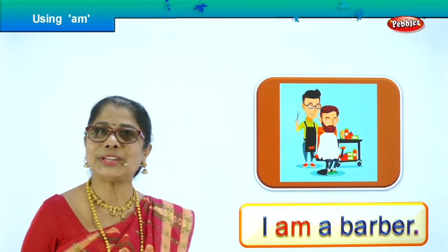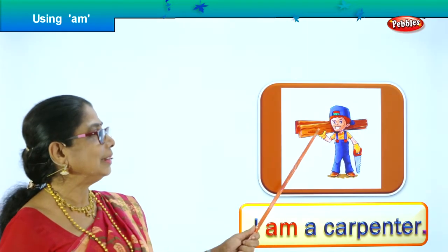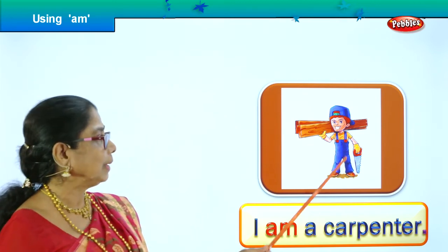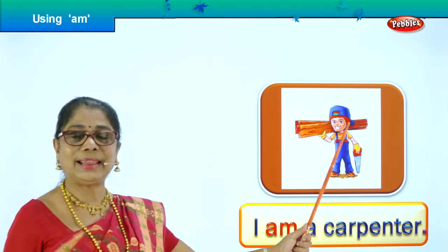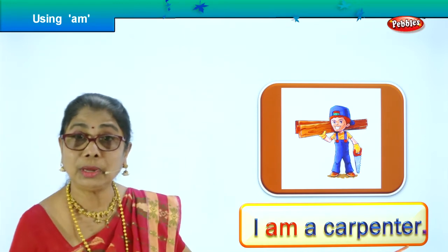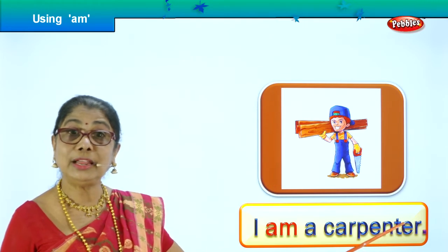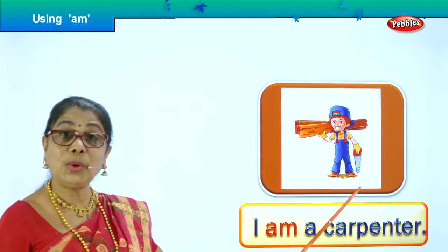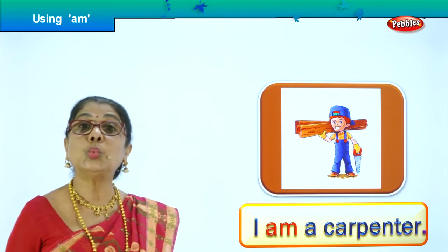Let's go to our next picture — see what you have here. He has got a long piece of wood in his hand and a saw in the other hand. What is he going to do? Who is he? 'Who are you?' He will say: 'I am a carpenter.' What does the carpenter do? Makes chairs, tables, doors and windows. 'I am a carpenter' — the carpenter works with wood.